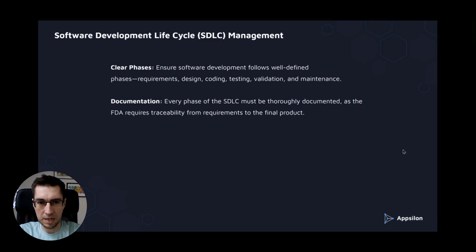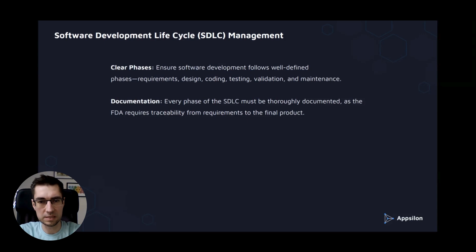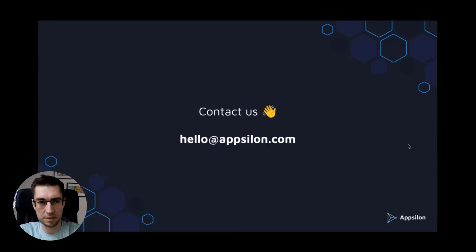What's in the software development lifecycle? The SDLC process has clear phases. It ensures that your software development follows well-defined phases such as requirements definition, design, coding, testing, validation, and maintenance. Every phase is documented, so the FDA can have traceability from the requirements phase to the final product.